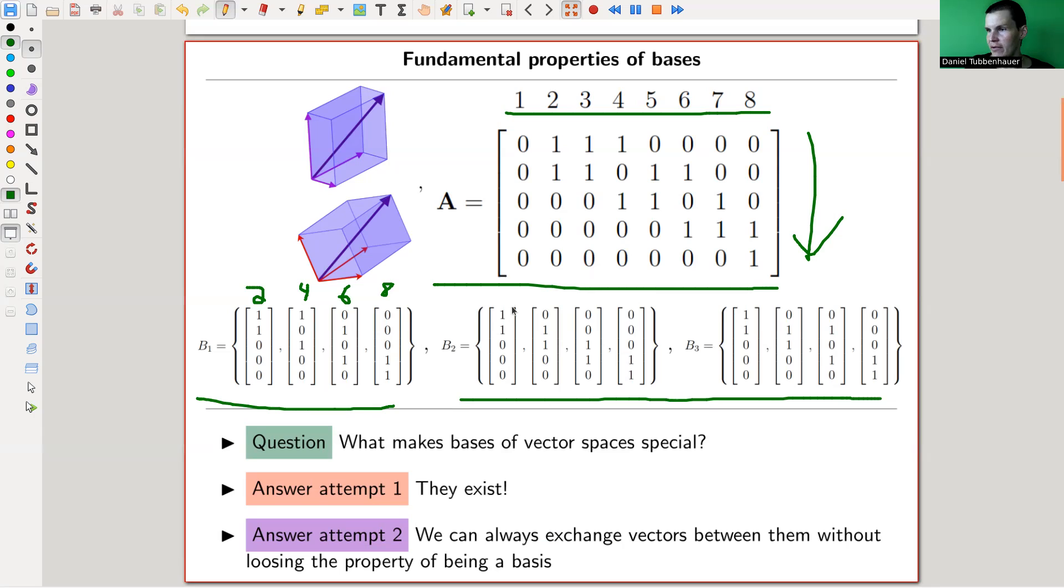So here, for example, here we have this vector is here. Maybe it was a different color. This vector is here. This vector is here. And we kind of exchange some of the vectors. So we can always do that with bases. You can even kind of exchange vectors in some controlled sense without losing the property that you have a basis. And that turns out to be the fundamental property that we want to generalize. And it's kind of brilliant because that's not the first thing that would have come to my mind, at least. But that's what it turns out to be.